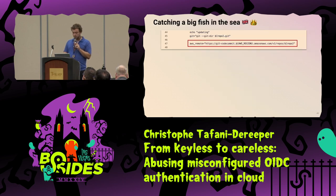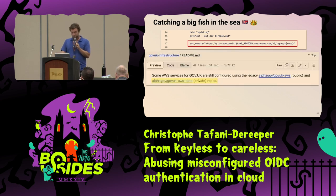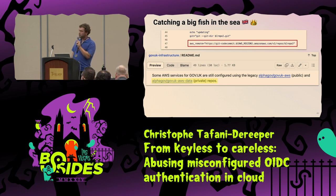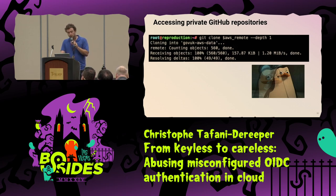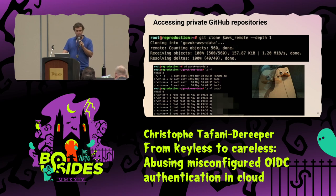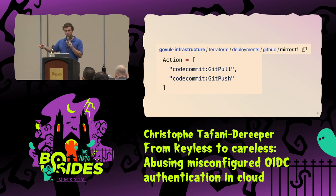That looks quite interesting. Diving into it, you see in the pipeline it's using CodeCommit and mirroring all the private repositories from the gov.uk org back to CodeCommit. Even though we didn't know the names of these repos, there are references in the readme — a public readme that mentions a private repo called 'gov.uk AWS data,' which sounds interesting. We went to AWS docs, figured out how to clone a repo using CodeCommit, and it worked. We were able to clone that repo and access content that was supposed to be private. Since the pipeline had git pull and git push access, an attacker could have pushed Terraform files to backdoor the repo.